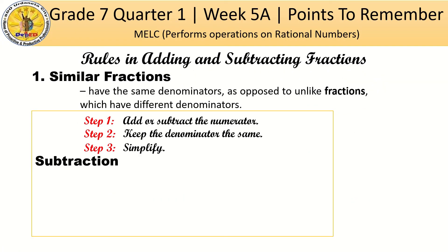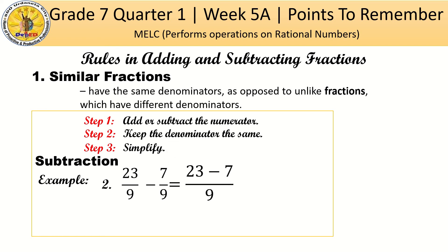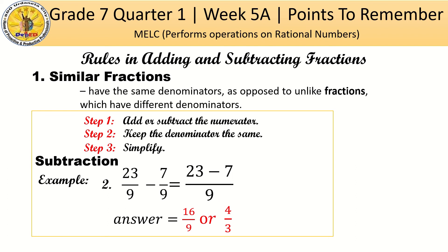How about subtraction? Example number 2: 23/9 minus 7/9. Again, copy the denominator since they are the same. Then perform the operation — we need to subtract. 23 minus 7 gives us 16 over 9, or 16/9. The lowest term of 16/9 is 4/3. Very easy.